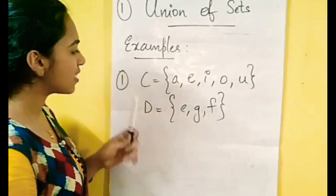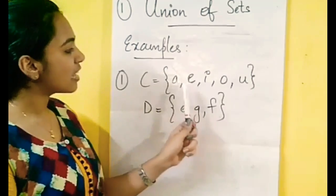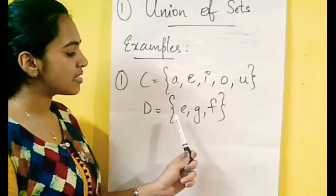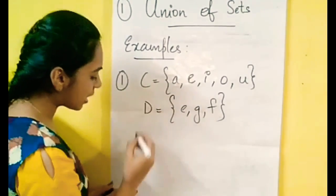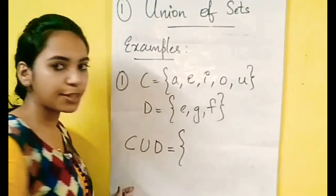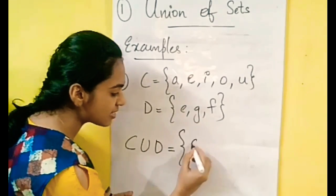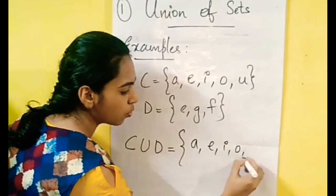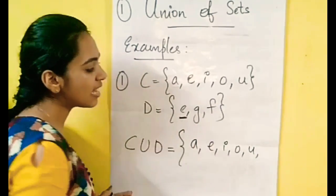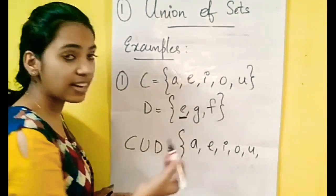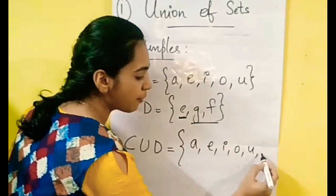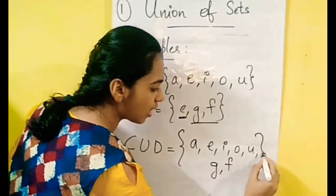Here are examples. First, if set A is {A, E, I, O, U} — the vowels — and set B is {E, G, F}, now for A union B: the elements of A are A, E, I, O, U. From B, E is already included, so we add G and F. Therefore A union B is complete.